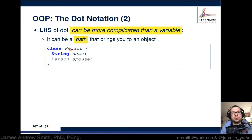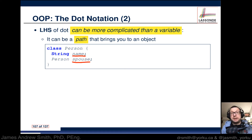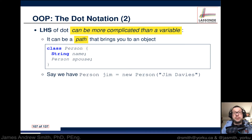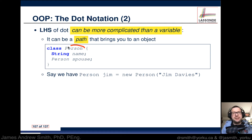For instance, we were talking about spouses and people before. If you have a class called Person, you can have an attribute for that person — their name — and you can also have an association with another object called spouse. So we can have connections between objects defined within the class, the blueprint for an object. There is this internal connection between objects that is possible through the blueprint.